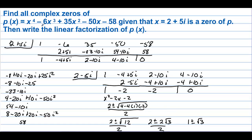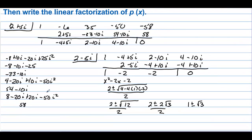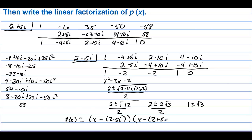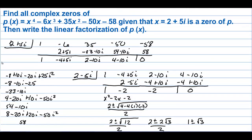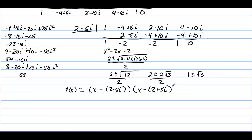So the linear factorization of p of x is: x minus (2 minus 5i) times x minus (2 plus 5i) times x minus (1 plus square root of 3) times x minus (1 minus square root of 3). Since the original is an x to the fourth polynomial, we have all four complex zeros accounted for. We could combine the last two with plus or minus notation.